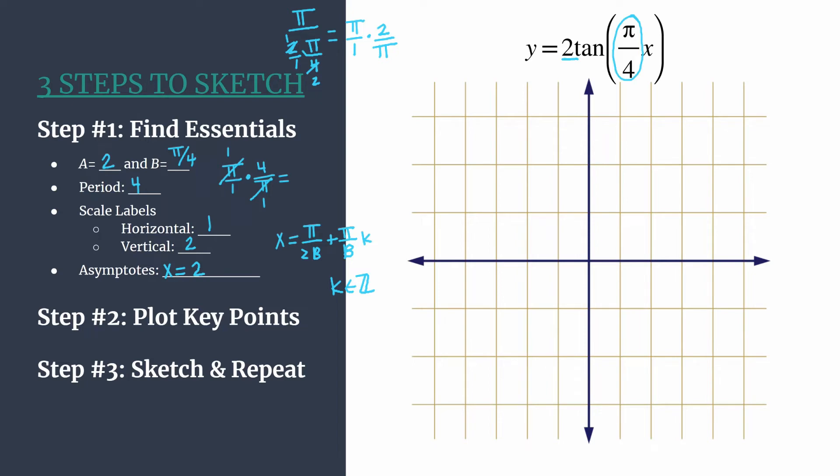So our first part of our asymptotes equation is just x equals two. And knowing what we know about how this asymptotes equation works for basic tangent graphs, it should not be surprising that the first asymptote with our method happens halfway through a period. So half of four is two. So if you wanted to work it that way, you could also just think about it and think it through.